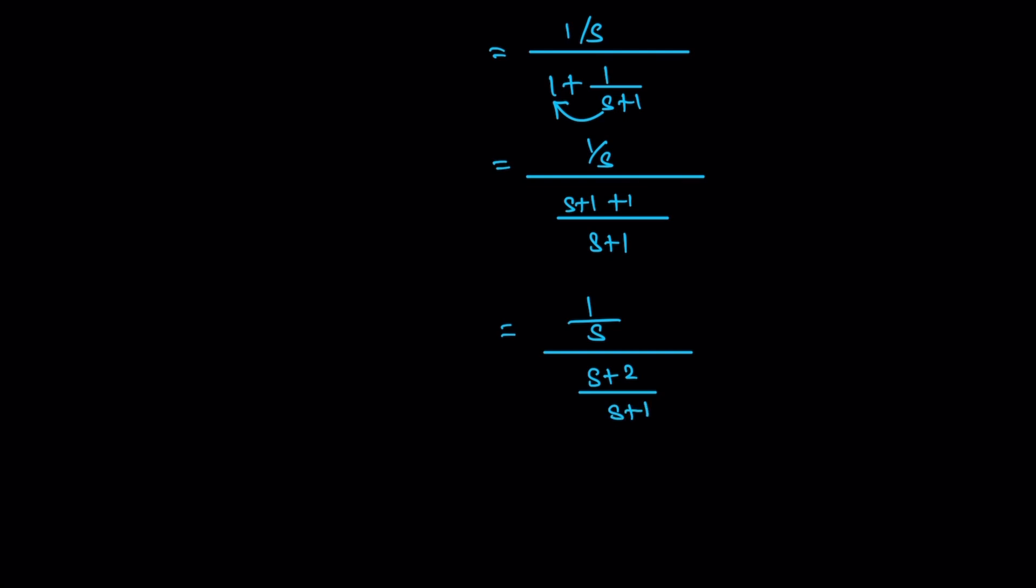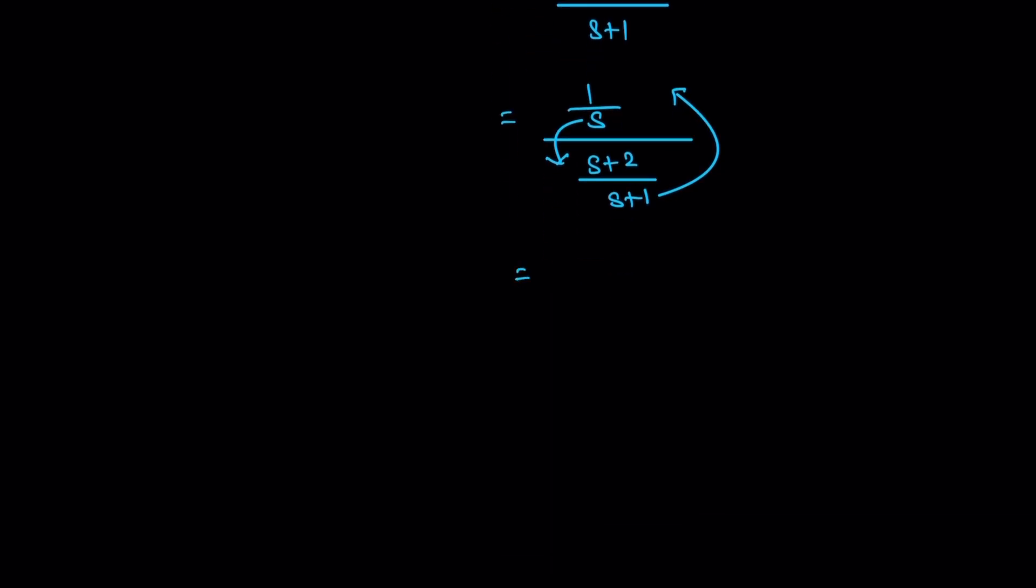So this one, 1 by 1 by concept means this is moving to numerator and this is denominator concept. So the final answer is s plus 1 divided by s into s plus 2 is equal to Y of s divided by X2 of s value. Thank you.